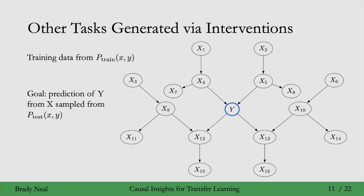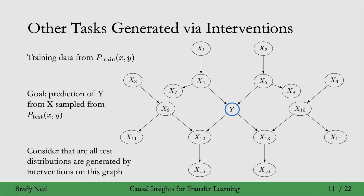We know that the data are generated in this way, and we know that we have two different distributions — p-train and p-test — and they're different distributions. You can imagine that we're getting different distributions by doing different interventions on the nodes in this graph. One distribution might be no interventions, another might be intervening on x1, another could be intervening on multiple nodes like x13, x10, x6. Any intervention on a set of variables could generate some distribution, p-train or p-test. You could imagine there are multiple different test distributions — if we're considering any distributions generated by an intervention on this graph, there's a combinatorial number of distributions we could be considering. And why is it natural to model different distributions like p-test as distributions that arise from intervening on this graph — interventional distributions?